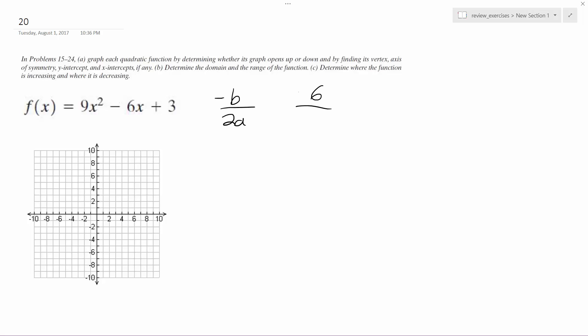So we plug in 1 over 3. We get 1 over 9, so 9 times 1 over 9 minus 6 over 3, which is 2, plus 3.